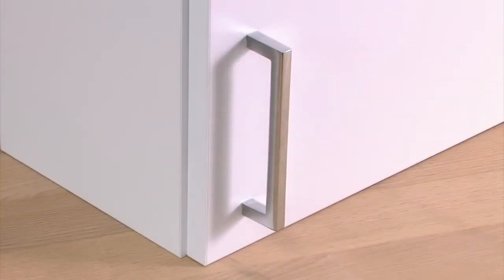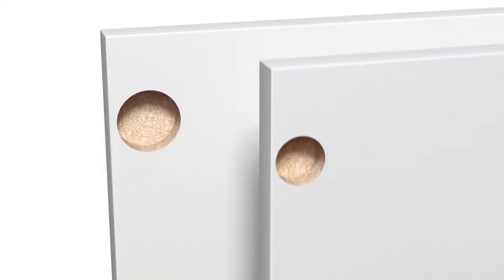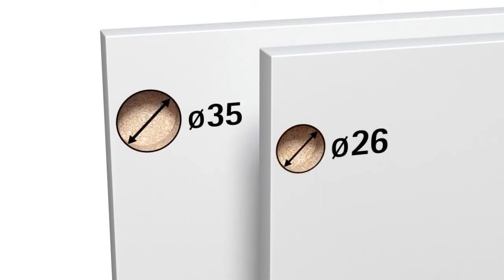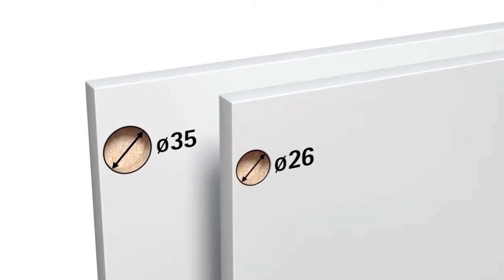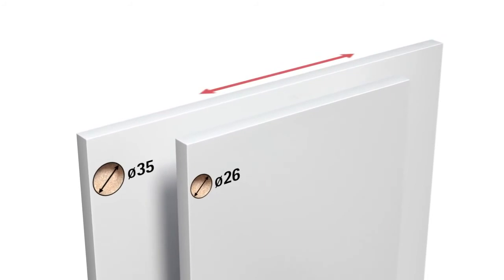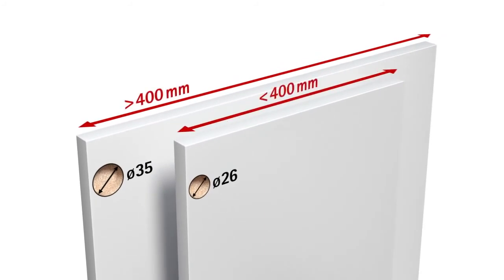But how many hinges do you need and in which size? As a rule of thumb, use small hinges with 26mm cups for doors in widths up to 400mm, and hinges with 35mm cups for wider doors.